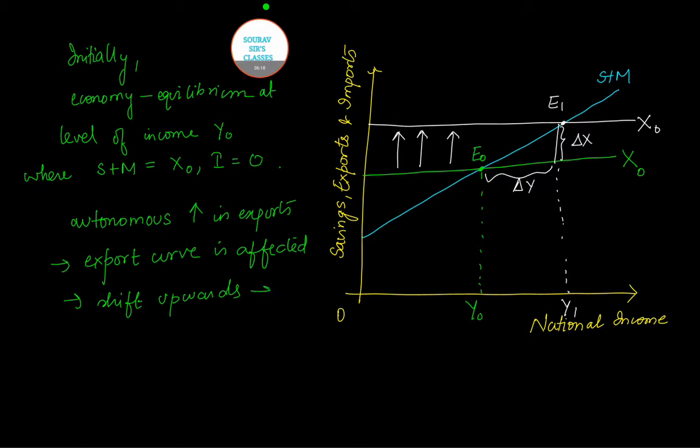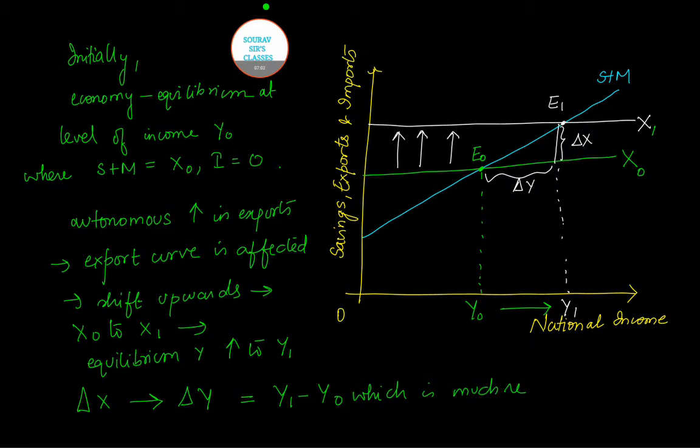So we have it shifts upwards from X₀ to X₁. And you can see clearly that the equilibrium income increases to Y₁. The increase in export by ΔX has led to an increase in income by ΔY, which is equal to Y₁ minus Y₀, and which is much greater than change in export.